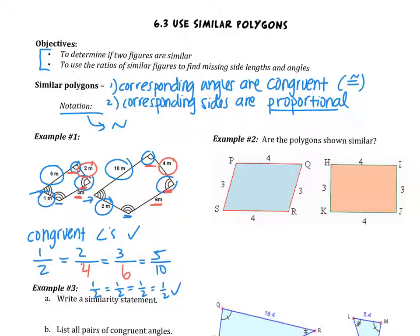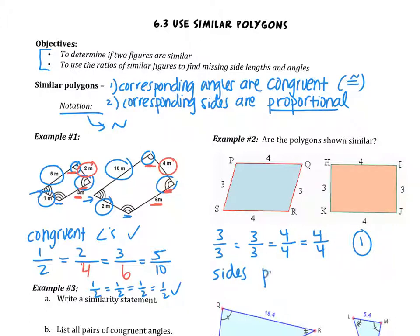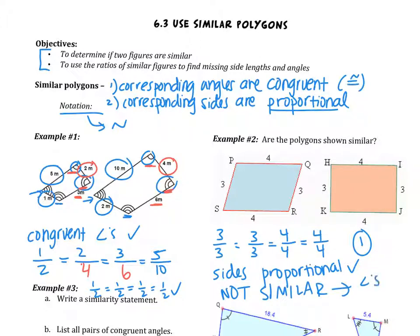In the second figure, we don't have angle markings, but we can look at the sides. The first figure has sides of three, three, four, and four. The second figure has the same sides — three, three, four, and four — so all ratios equal one, meaning the sides are proportional. However, the angles don't look congruent, and we have no markings to confirm them. These figures are not similar because you need both: sides must be proportional AND angles must be congruent.